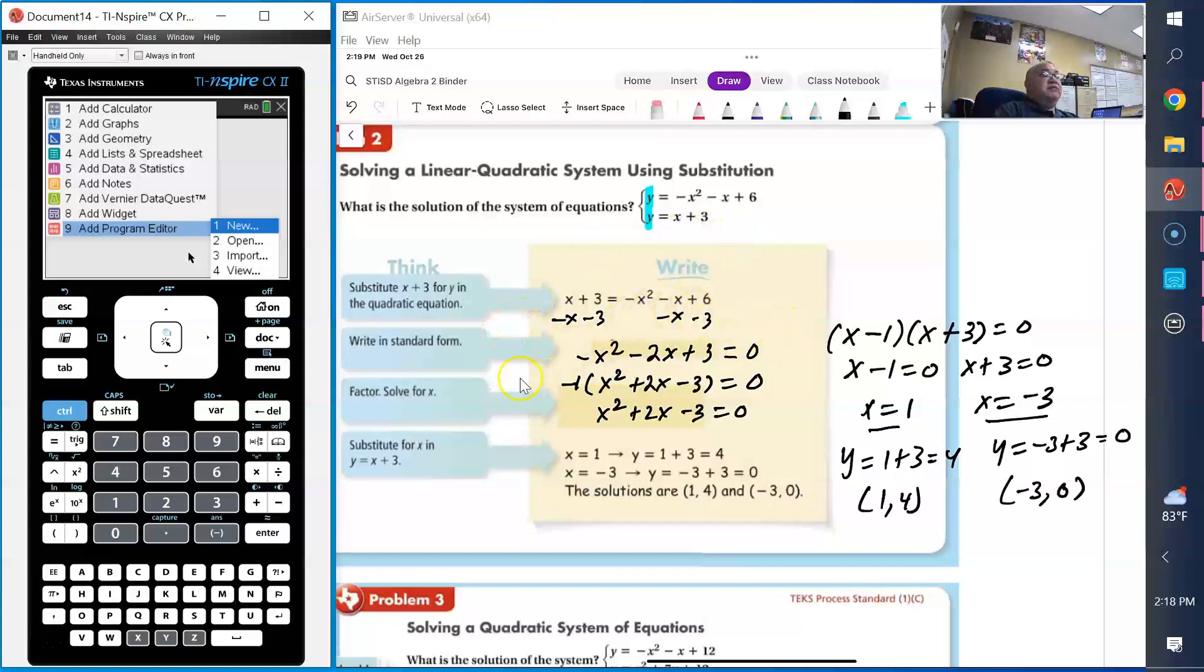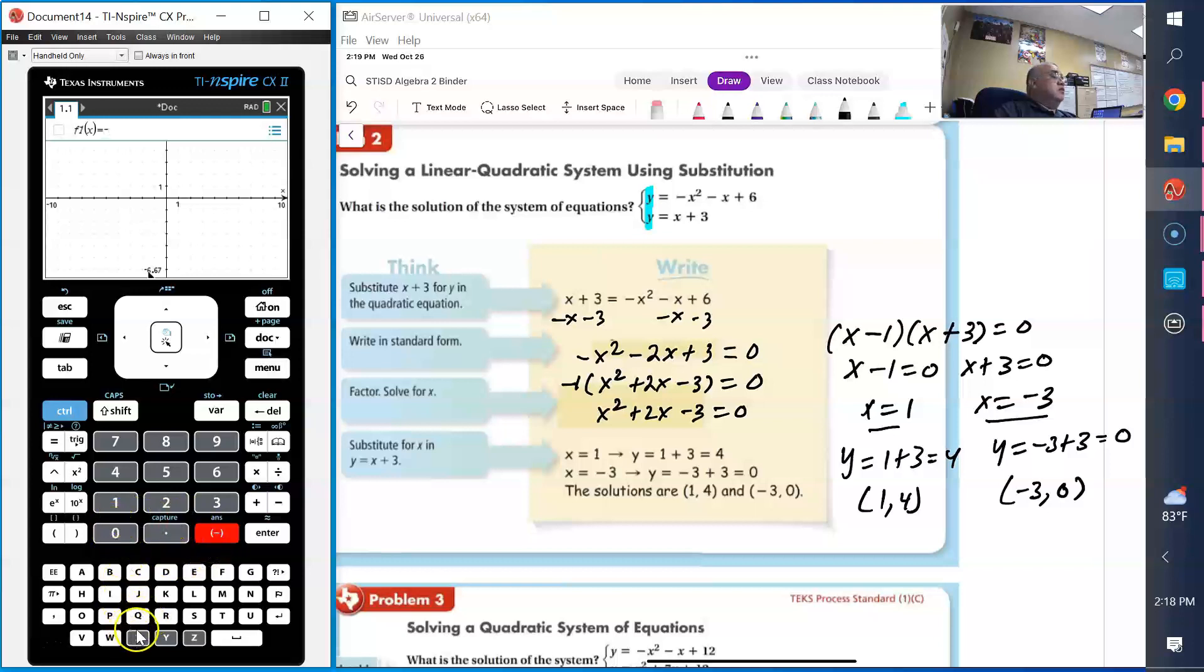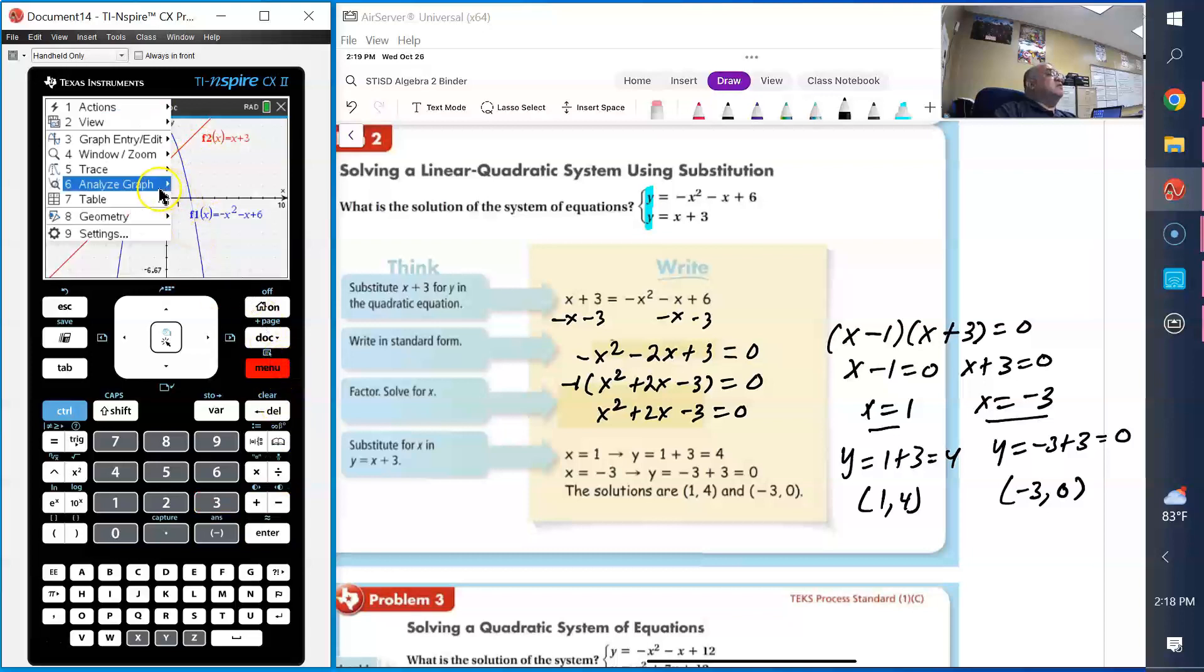Now if you want to see this graphically to check it, you can. Enter negative x squared minus x plus 6, then menu, and enter x plus 3. To find those intersections, go to menu, analyze graph, and find the intersection. Here's the first intersection at 1 comma 4, that's what we found. The other intersection is negative 3 comma 0, just like we got.